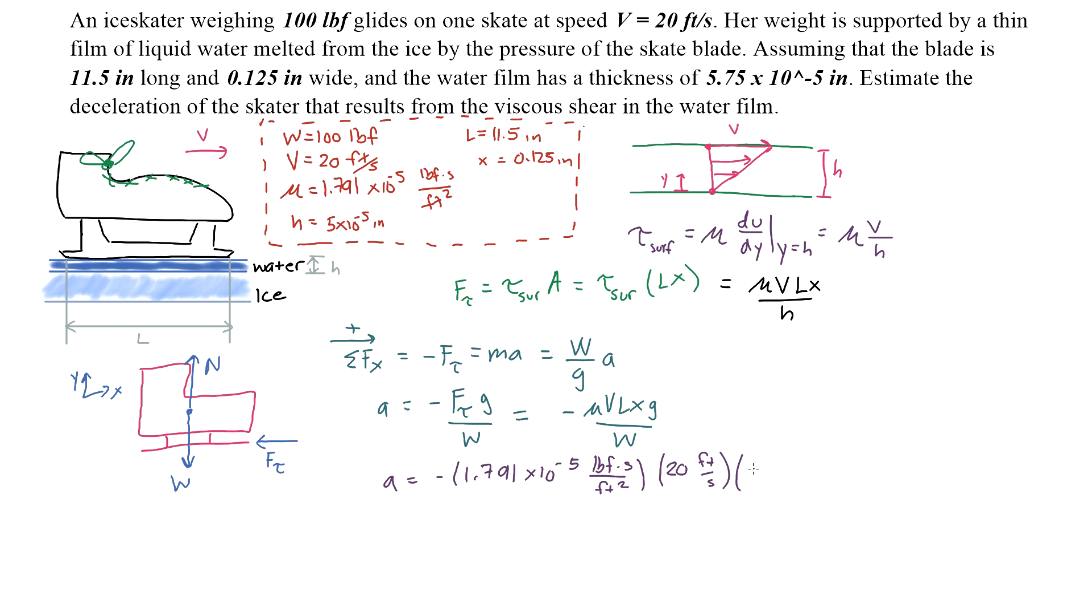The length is 11.5 inches divided by 12 inches per foot. Same thing for the width, which is also in inches. Gravity is 32.2 feet per second squared, not meters per second squared. And finally, divide by the weight of the skater, which is 100 pounds.